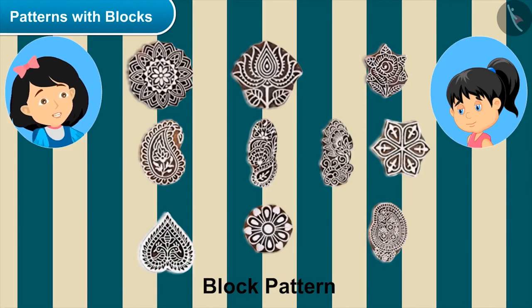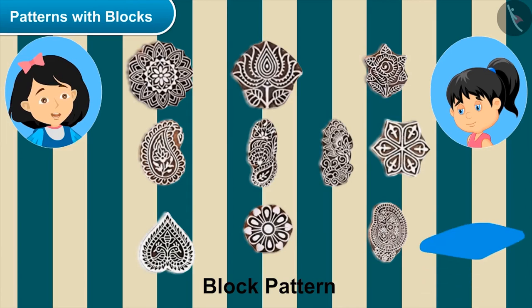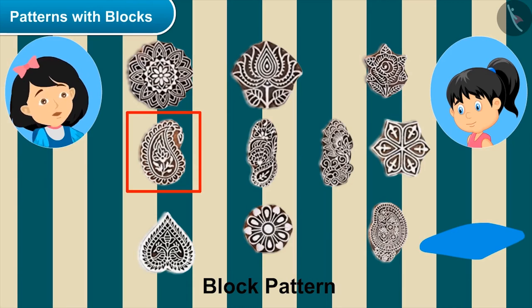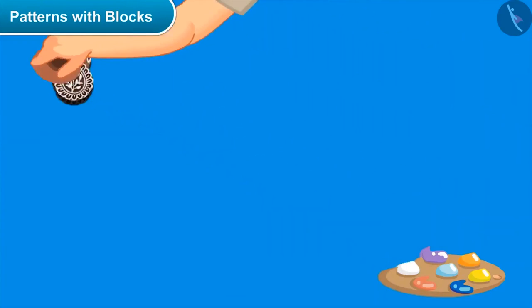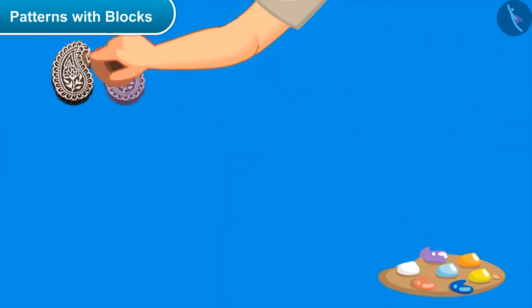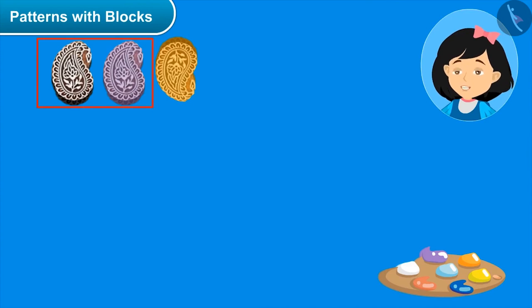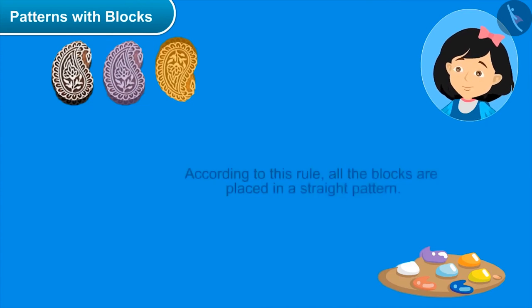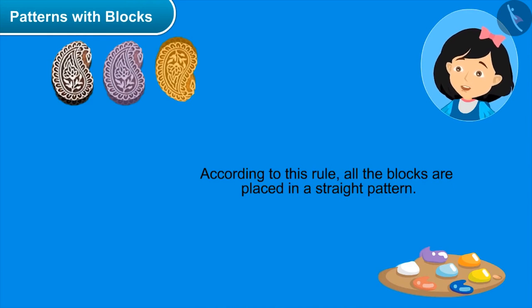Sister shows the blocks. Misty asks: can I draw? Sister says: yes, first paint this block with color, then apply it on the cloth. Misty tries the next one but does it wrong. Sister says: not like this — first look how I have drawn these two blocks. If the rule by which these two are made is followed, then only you will get the pattern.